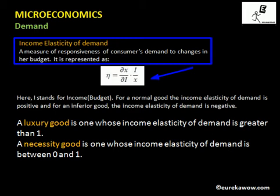For a normal good, income elasticity of demand is always positive. By definition, for a normal good the quantity demanded increases when income increases, so ∂x/∂i is positive. Since i and x are always positive, eta is positive for normal goods. For inferior goods, by definition demand falls as income rises, therefore ∂x/∂i is negative, and since i and x are always positive, eta — the income elasticity of demand — is negative for inferior goods.